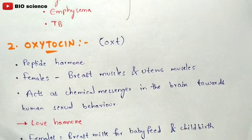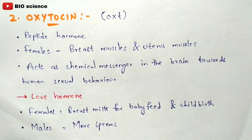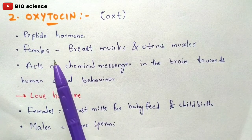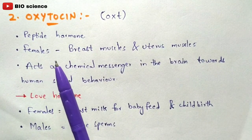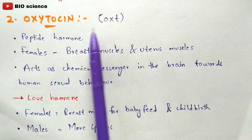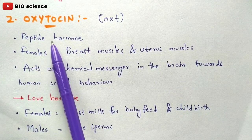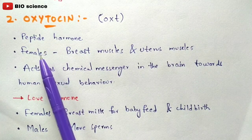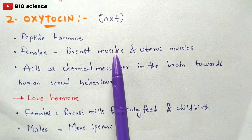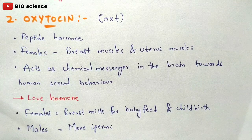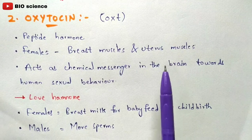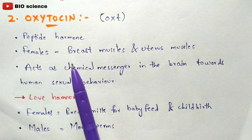The second hormone secreted by the posterior pituitary gland is oxytocin, shortly called OXT. It is a peptide hormone seen in both males and females. In females, it mainly helps increase the strength of breast muscles and uterus muscles, since embryonic development occurs in the uterus.